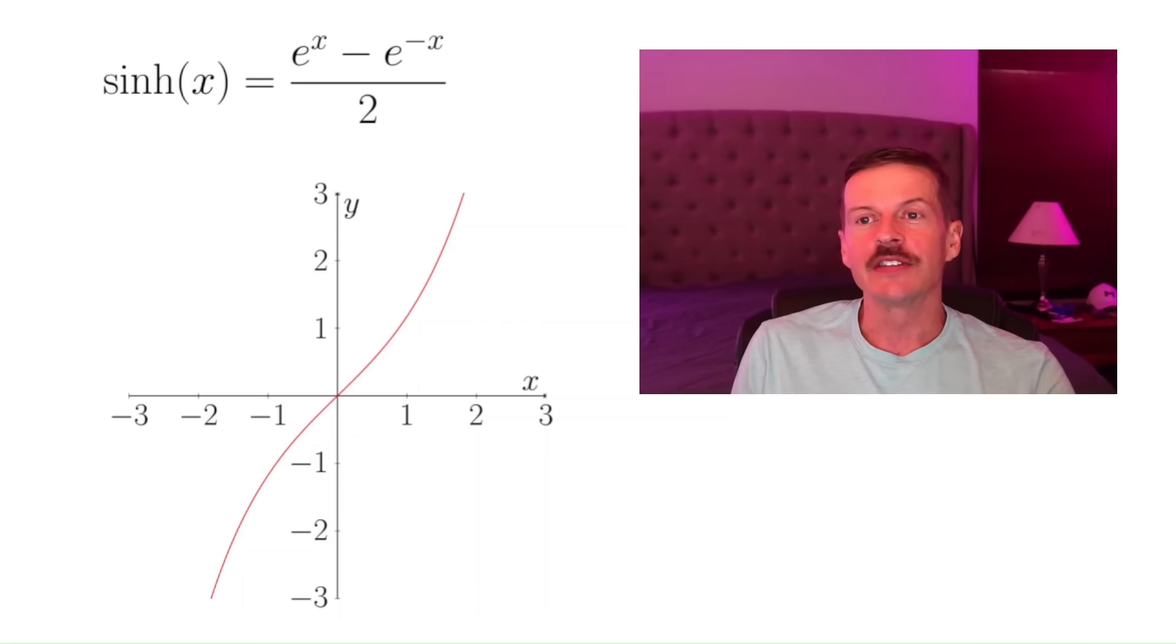So, for example, sine and cosine are both bounded functions and they're periodic. But the hyperbolic functions are unbounded and they're not periodic. So what is the connection?